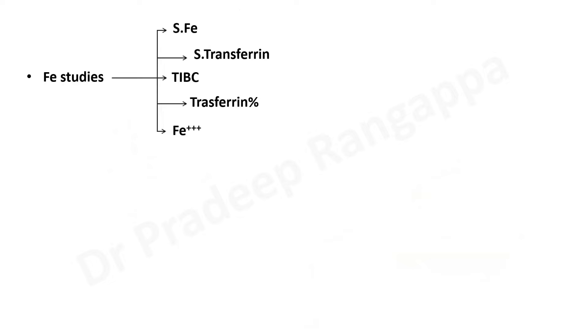When we talk about iron studies to diagnose iron deficiency anemia, you would do a peripheral smear, look at microcytic hypochromia, and then do iron studies. There are four to five components in iron studies: serum iron, transferrin, total iron binding capacity, transferrin saturation, and ferritin. These are the elements you would get in any iron study that you order.